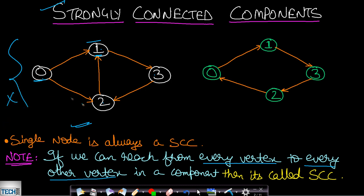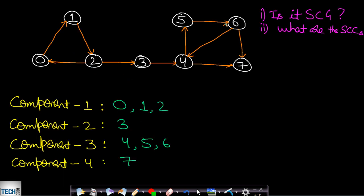In the second graph, also having a single component, if you start from node 0 you can reach every other node, and the same holds for nodes 1, 3, and 2. Since there is a path between any two vertices, we can say that this is a strongly connected component — or a strongly connected graph.